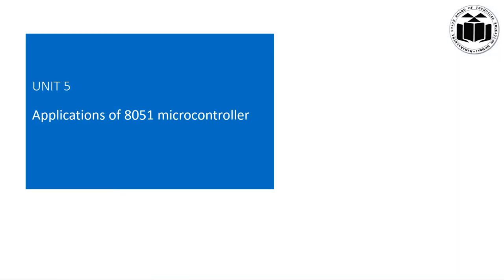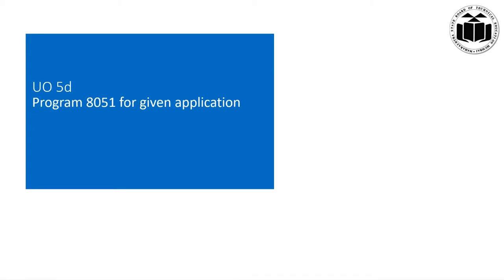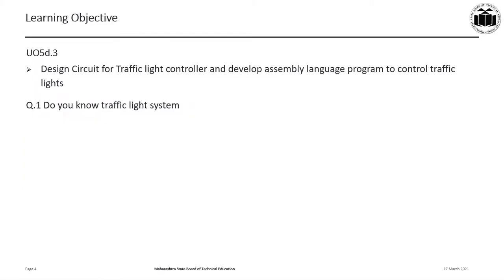Unit 5 is applications of 8051 microcontroller and the unit outcome is to program the 8051 for a given application. The learning objective of this presentation is to design a circuit for traffic light controller and develop an assembly language program to control traffic lights.